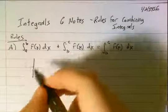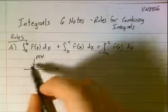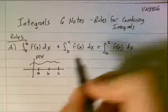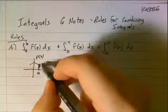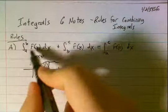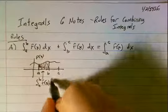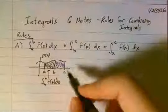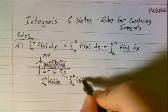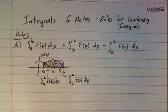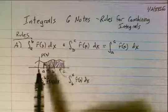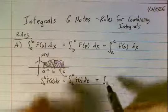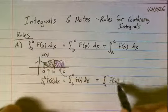What's happening here is that if we have some curve f(x) and we've got an integral from a to b and an integral from b to c — remember that the integral is the area under the curve — we have this integral from a to b of f(x) dx and this integral from b to c of f(x) dx. Since the two areas touch, together the area goes all the way from a to c.